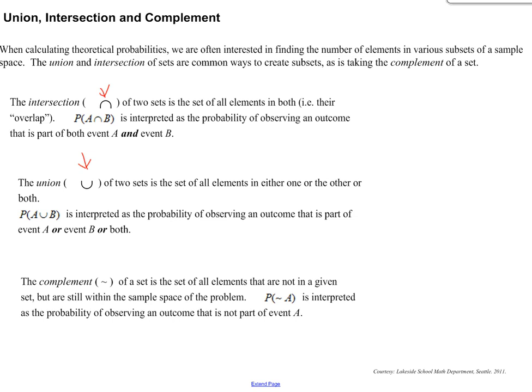So the complement, which is that small squiggly line right here, of a set is the set of all elements that are not in a given set, but are still within the sample space of the problem. So the probability of complement A is interpreted as the probability of observing an outcome that is not part of event A. So Ms. Howell told me that you guys have also been using complement as written like this. So essentially the squiggly line is the same thing as the C. You can write the C or the squiggly line. Both are acceptable.